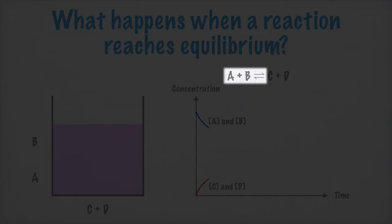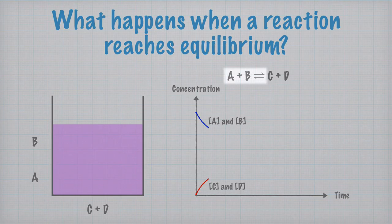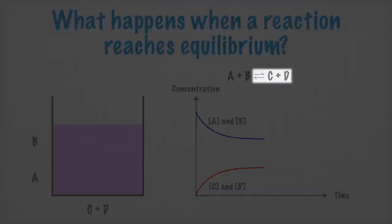But as some C and D are formed, the reaction rate to the left starts to increase. At the same time, the concentrations of A and B decrease, which leads to the reaction rate to the right also decreasing.